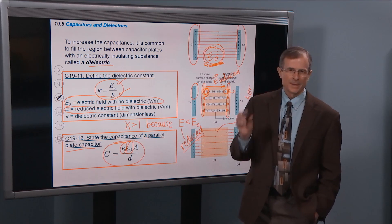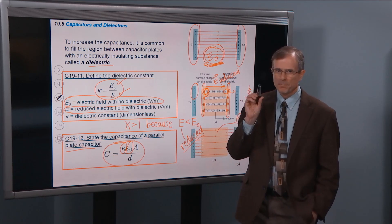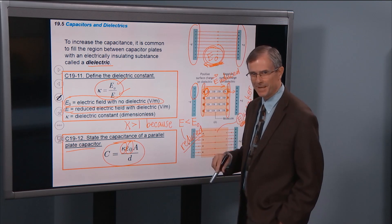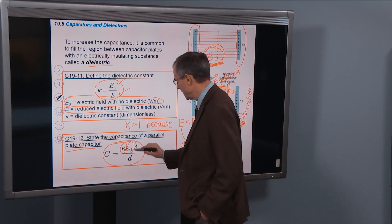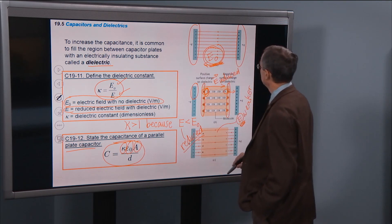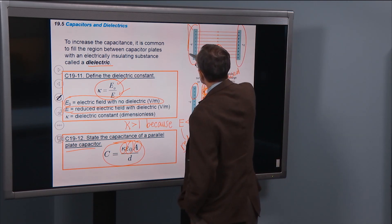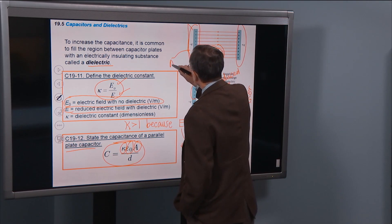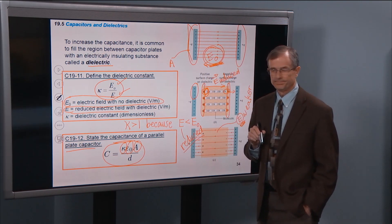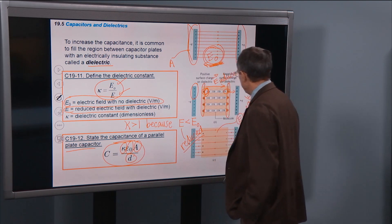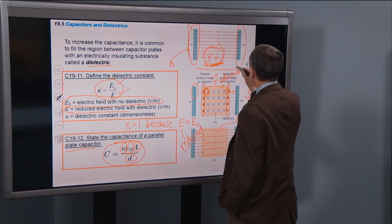I promised you we'd be using that. And here's a case where we do use it. The area of the capacitor. That is the area of one of the plates. And then divided by d, the distance between the plates.